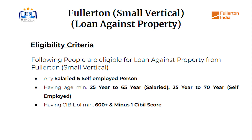Hello, today we are going to talk about Fullerton Small Vertical Loan Against Property. Let's talk about eligibility criteria. Any salaried person and self-employed are eligible. Applicant age should be between 25 to 65 years for salaried and 25 to 70 years for self-employed. The CIBIL score should be more than 601.